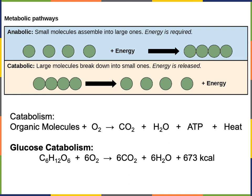In contrast, a catabolic pathway is a metabolic pathway where a large molecule is broken down into smaller molecules and energy is released. A variety of organic molecules can be broken down by catabolic pathways to release energy that can then be stored as potential energy in the chemical bonds of ATP. Energy will also be released as heat, which can help maintain body temperature.